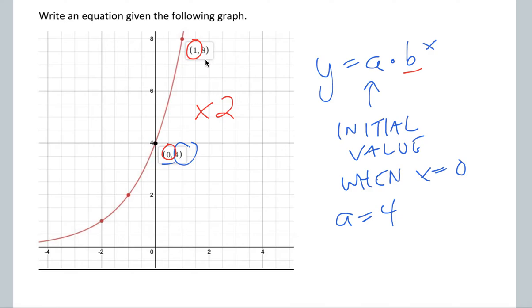So that means our b value is going to be 2. That's what we're multiplying by for the y values each time we increase one x value. So putting it all together, y equals 4 times 2 to the x would be the equation that represents this particular graph.